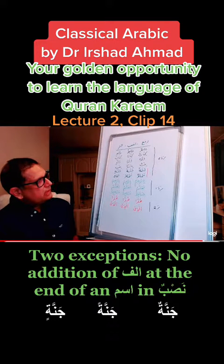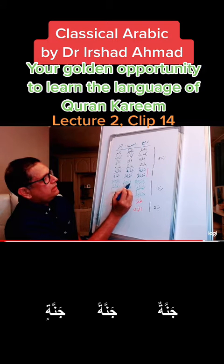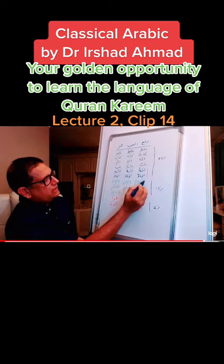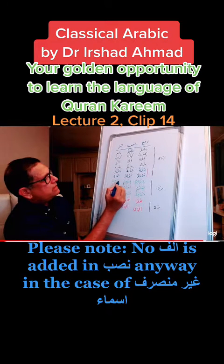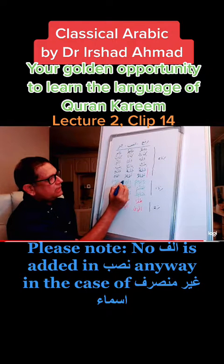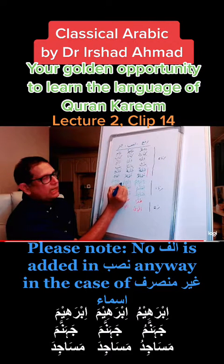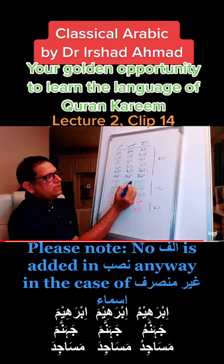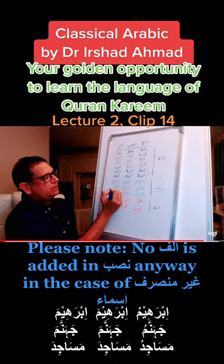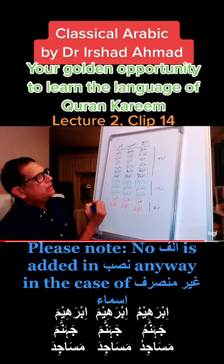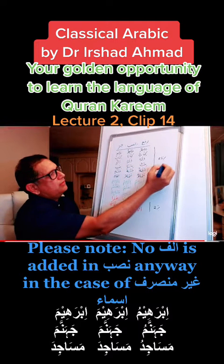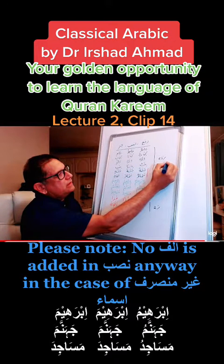On the other hand, you will have also noticed that in this second category of nouns, when we write them in the Nasab and Jar forms, the appearance is the same, and second, there is no Aleph added. So: Ibrahimu, Ibraheema, Ibraheema — no Aleph. Jahannamu, Jahannamah, Jahannamah — no Aleph. Masajidu, Masajidah, Masajidah — no Aleph here.